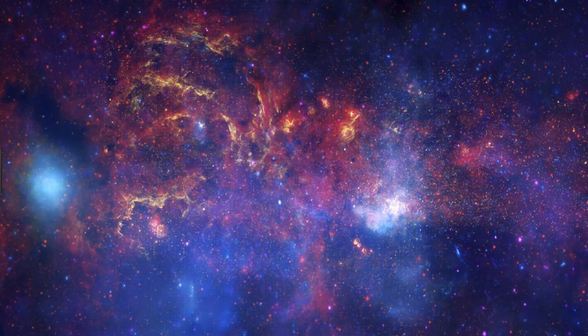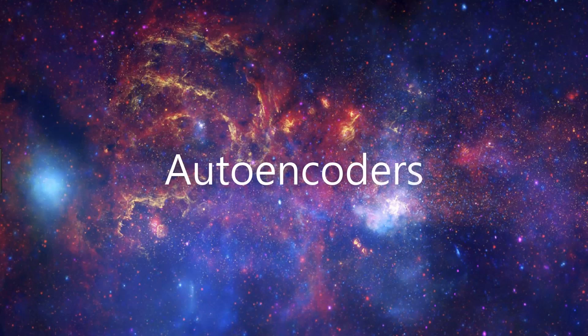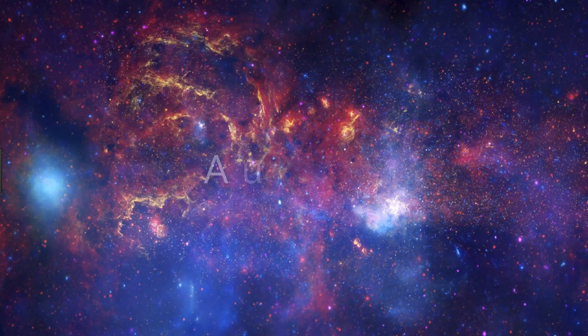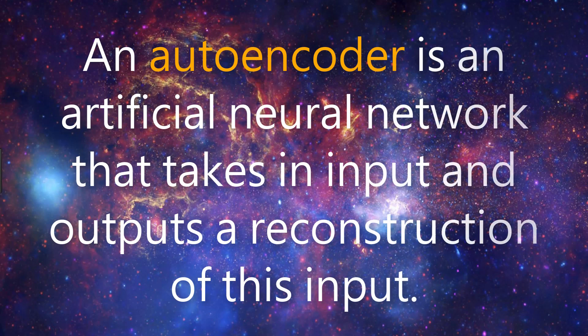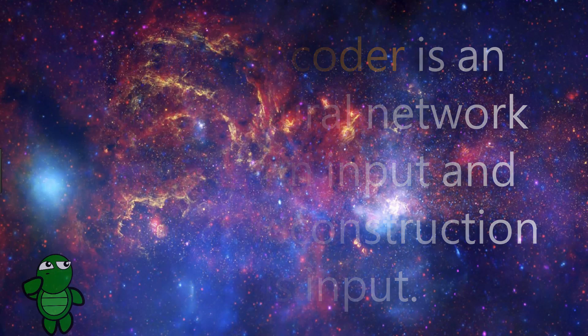Unsupervised learning is also used by autoencoders. In the most basic terms, an autoencoder is an artificial neural network that takes an input and then outputs a reconstruction of that input. Based on everything we've learned so far on neural networks, this seems pretty strange, but let's explain further by using an example.